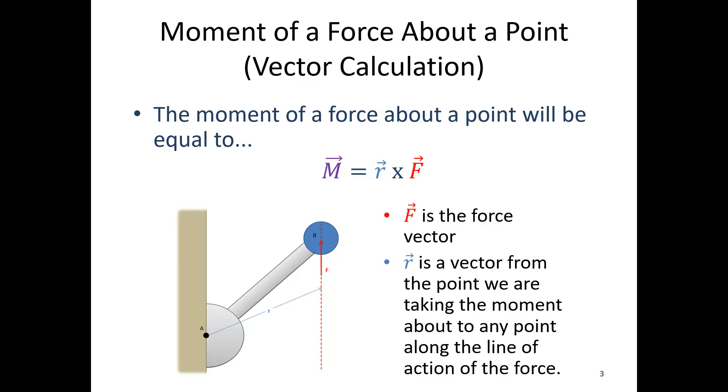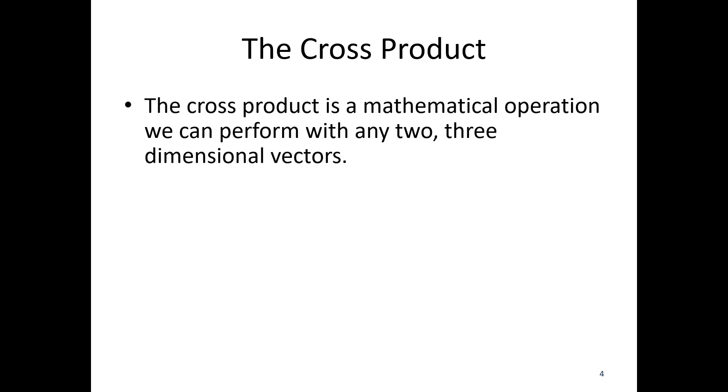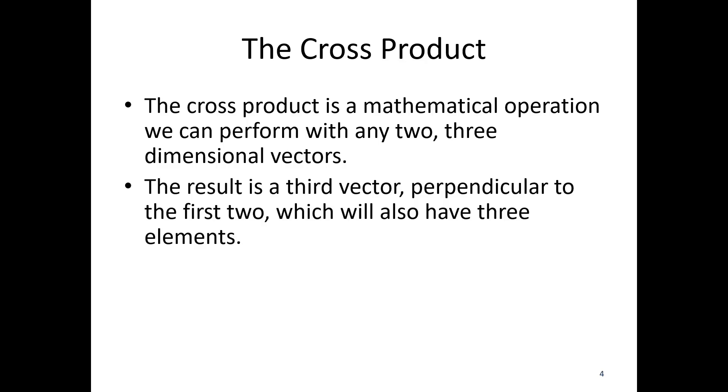So we need r cross f that's going to give us our moment vector. The cross product is a mathematical operation we can perform with any two three-dimensional vectors. The result is a third vector, perpendicular to the first two, which will also have three elements.